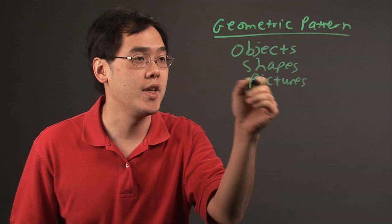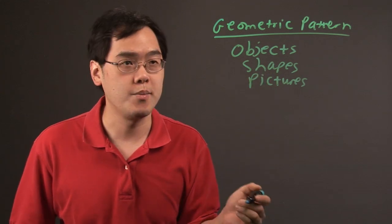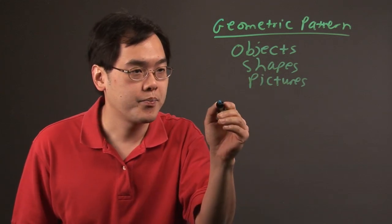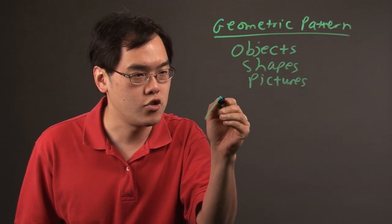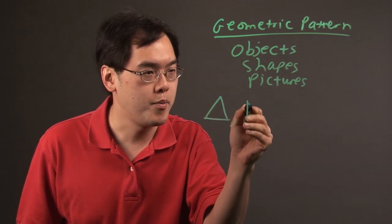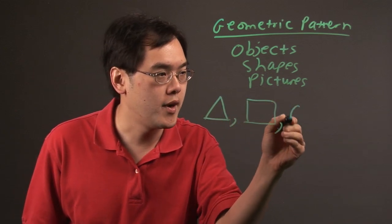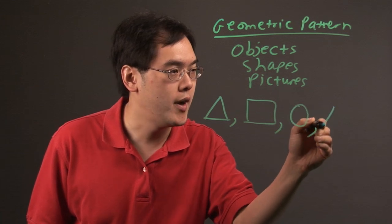Within either set of data or shapes, so for example if you have, which I'll just use shapes as an example, you may start off with a triangle followed by a square followed by a circle followed by a triangle followed by a square.